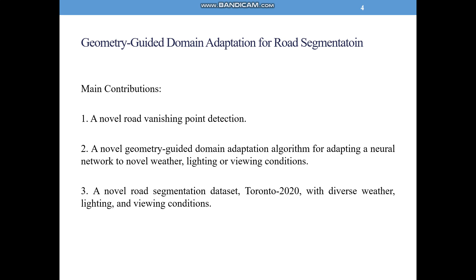In general, there are three main contributions in our work. First, we propose a novel road vanishing point detection algorithm. Second, we propose a novel geometry-guided domain adaptation algorithm for adapting a neural network to novel weather, lighting, and viewing conditions. Third, we propose a novel road segmentation dataset, Toronto 2020, with varying conditions. This dataset will be published soon.